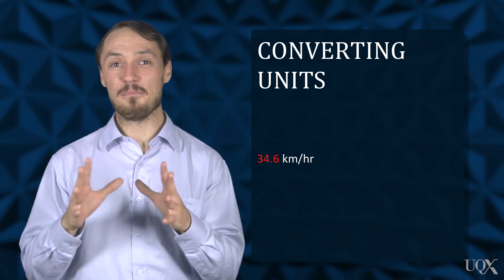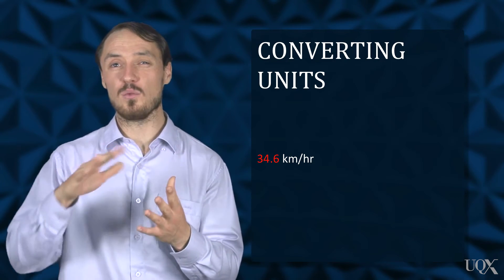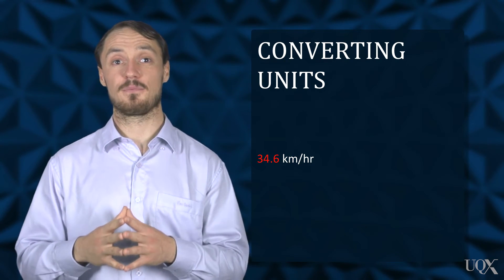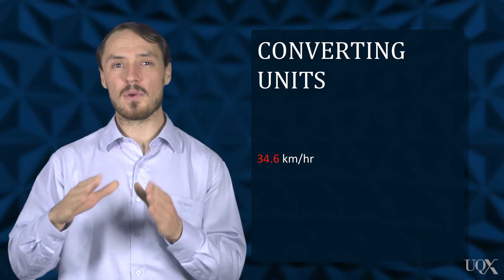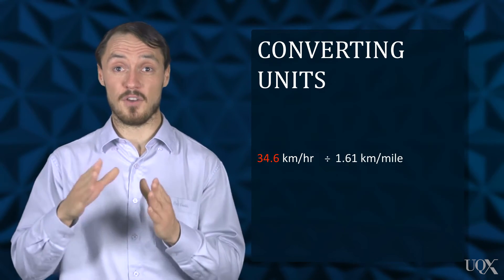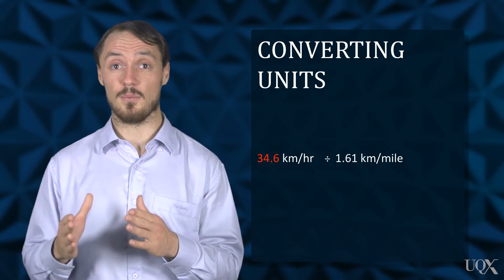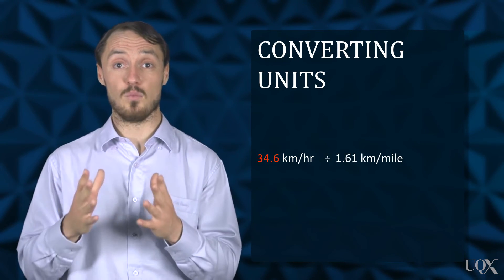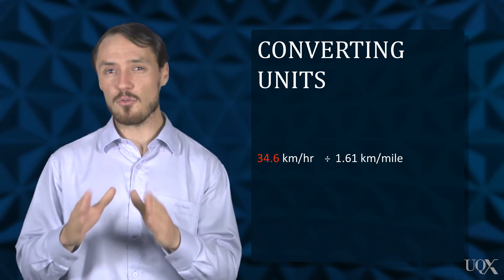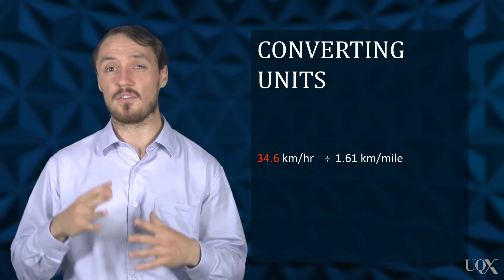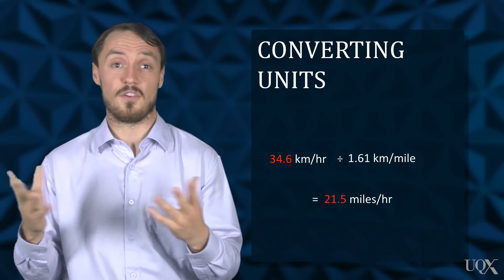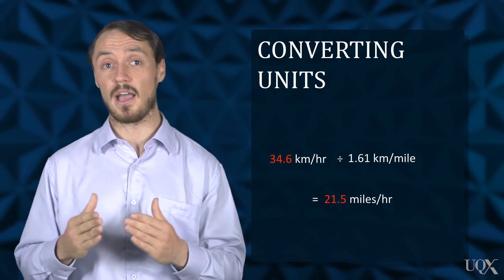One mile is equivalent to approximately 1.61 kilometers. We must convert kilometers to miles by dividing the number of kilometers by 1.61. Our runner is traveling approximately 21.5 miles per hour.